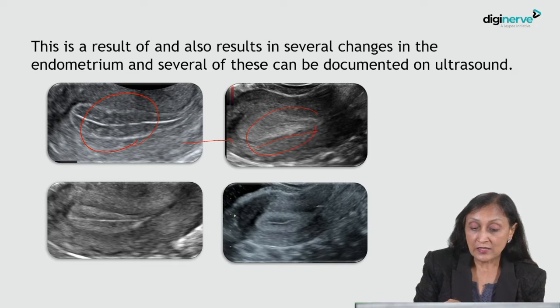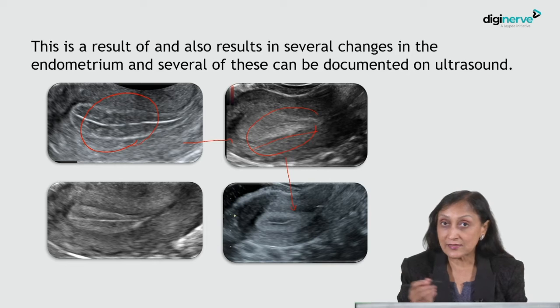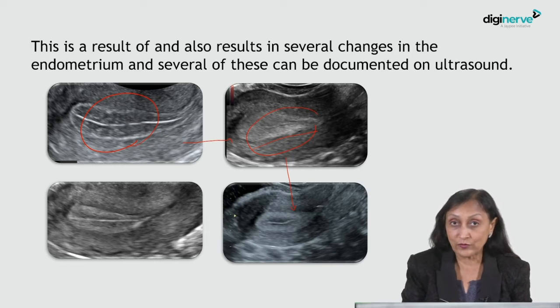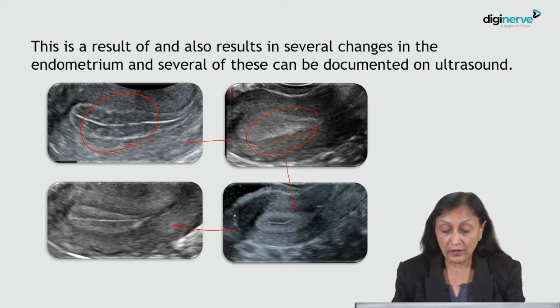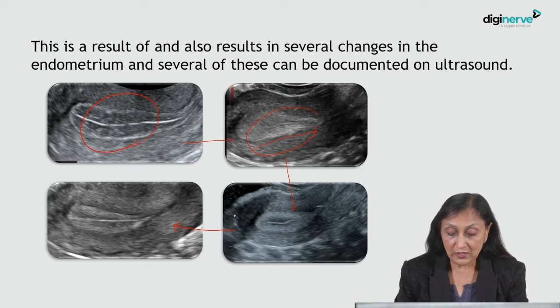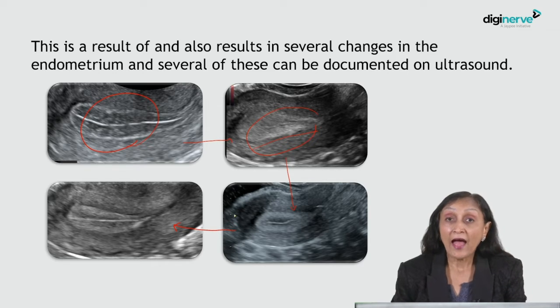That hyperechogenicity continues to increase towards the center of the endometrium, and the entire endometrium becomes hyperechoic in the midluteal phase, beyond which it starts thickening up. Implantation of the embryo then occurs, which is seen as asymmetrical thickness of the endometrial layers.